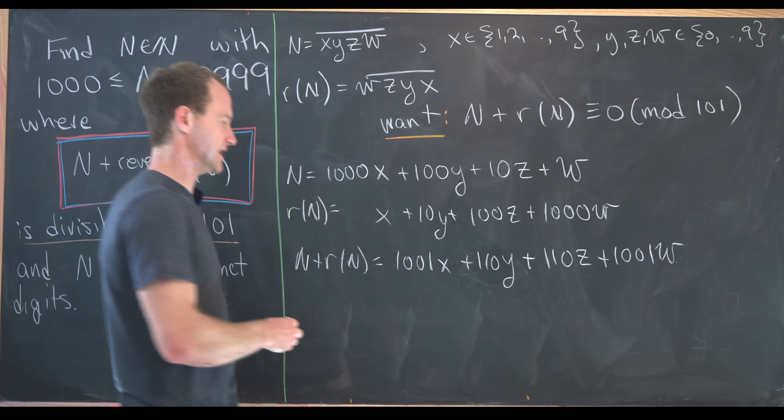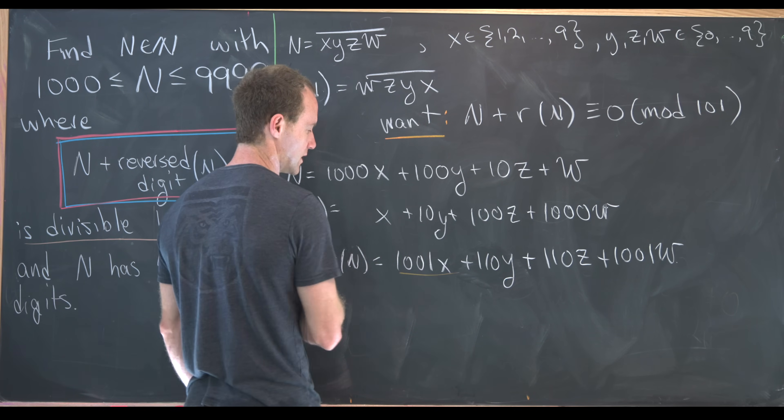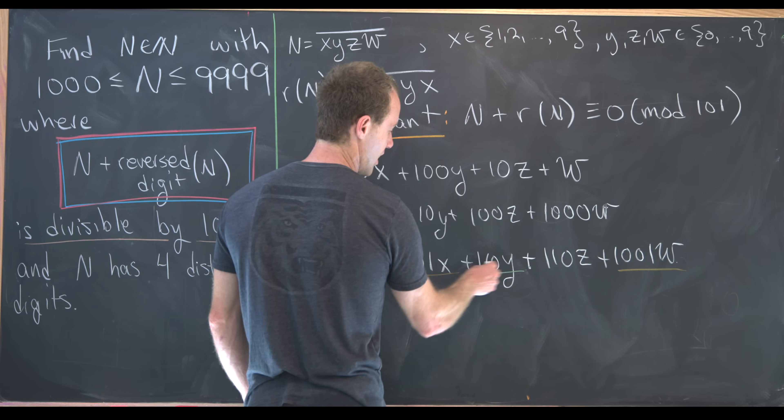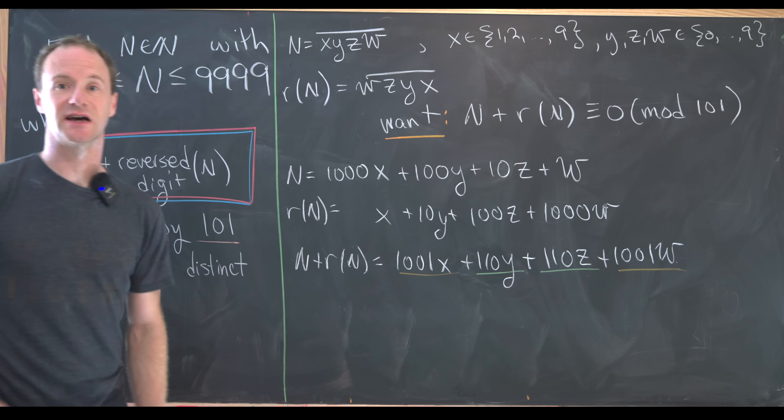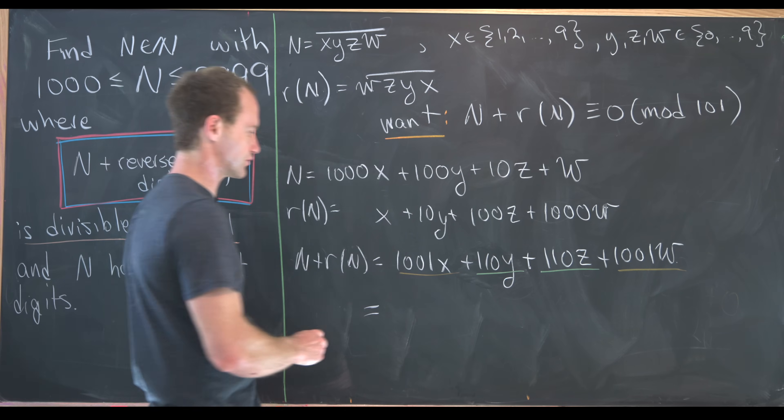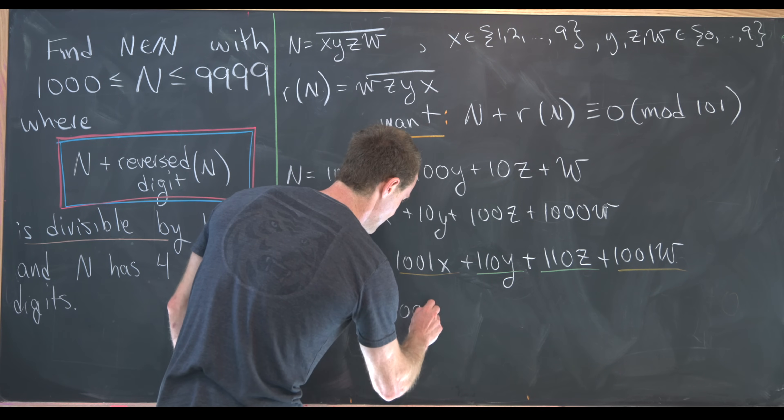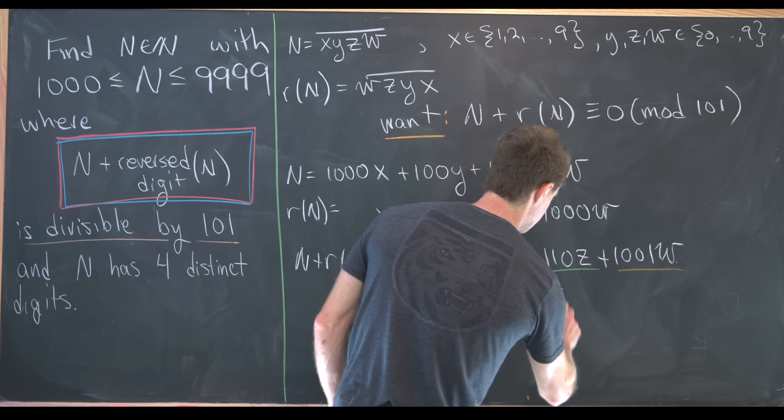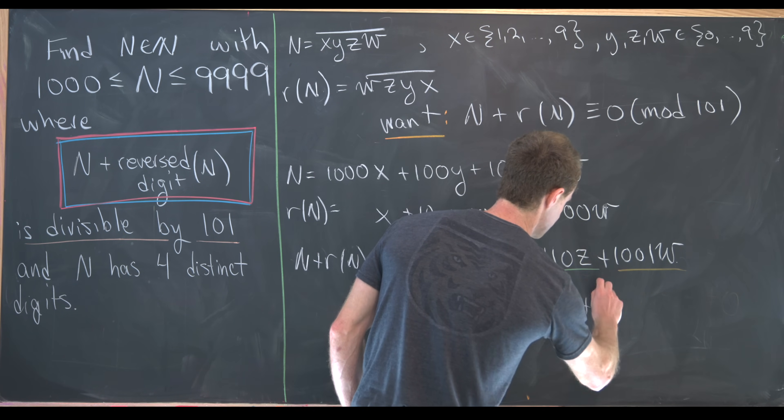Now we can do a bit of simplification. So notice that we have 1001 times X and 1001 times W, and we have 110 times Y and 110 times Z. So maybe that makes it kind of logical to rewrite this as 1001 times X plus W plus 110 times Y plus Z.